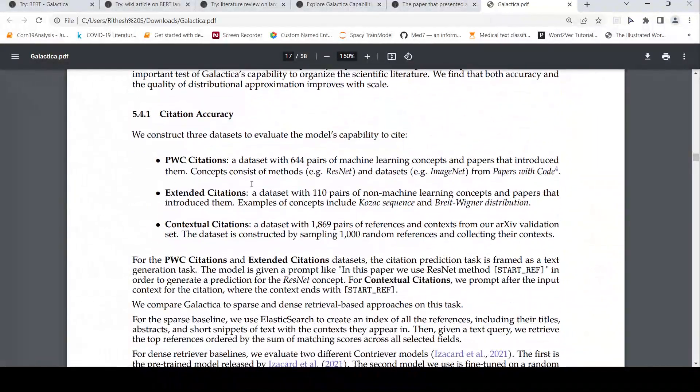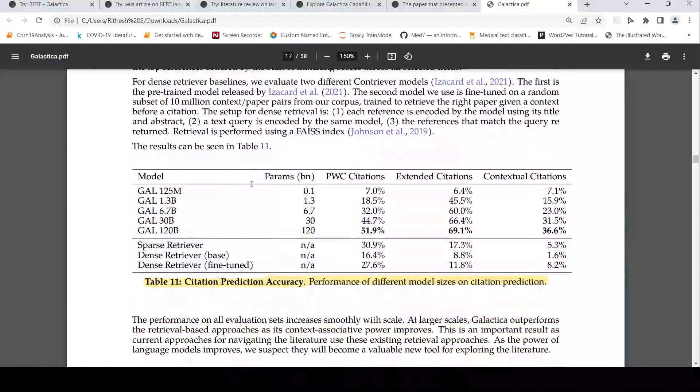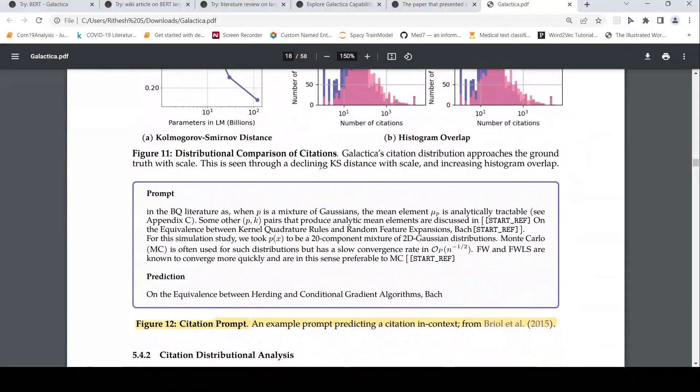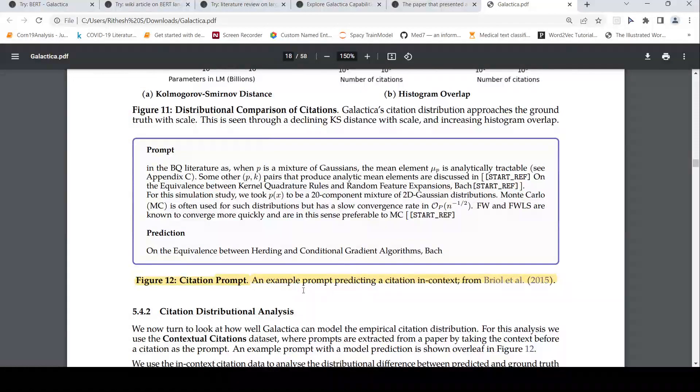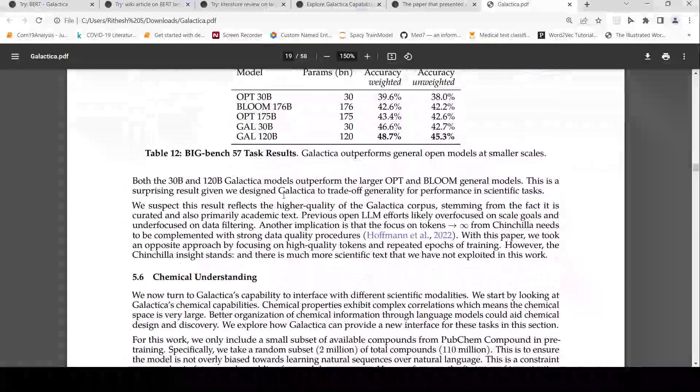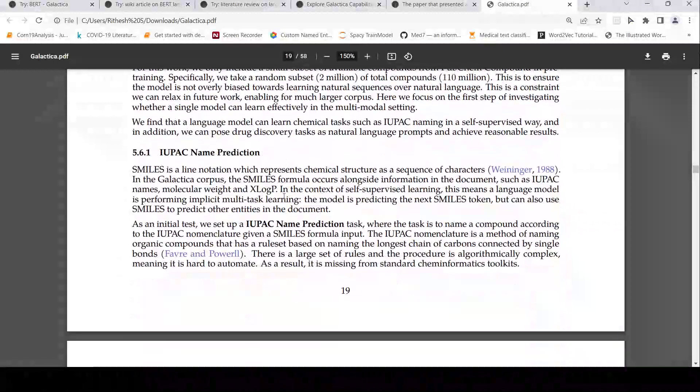This is about the citations. So here also they say that the citation prediction accuracy they have given some results on that. So here there is something called an example prompt predicting a citation in context. So this is the prompt so that they include some tokens called start reference and end reference for that particular thing and then the prediction. In the prediction it predicts which is the citation for this particular piece of text. They have explained a little bit more on this.